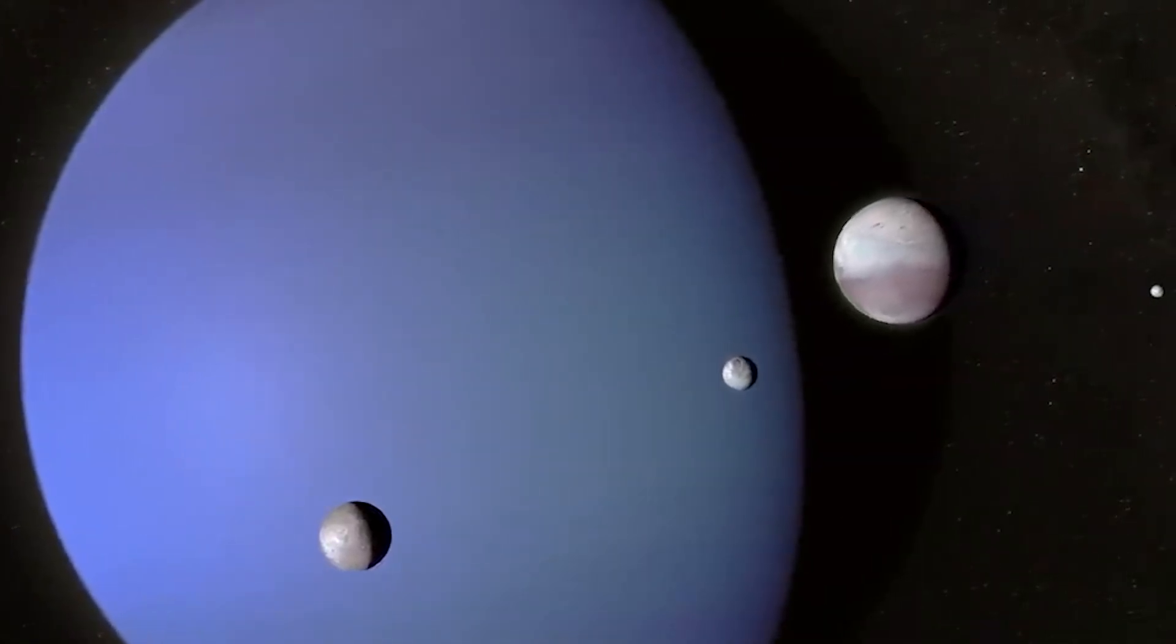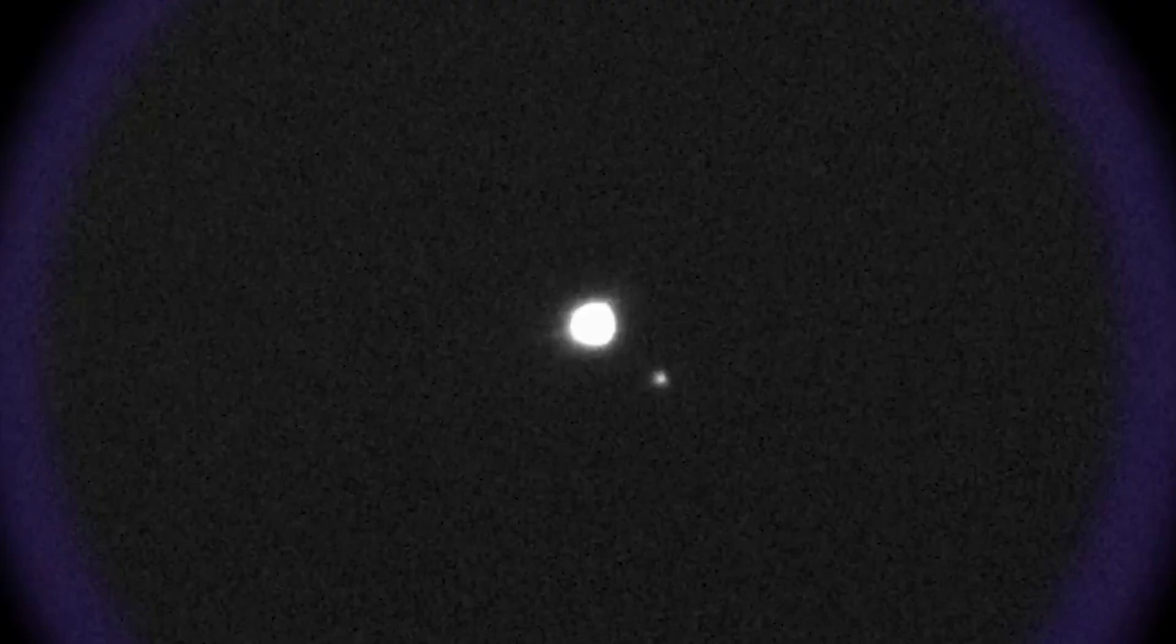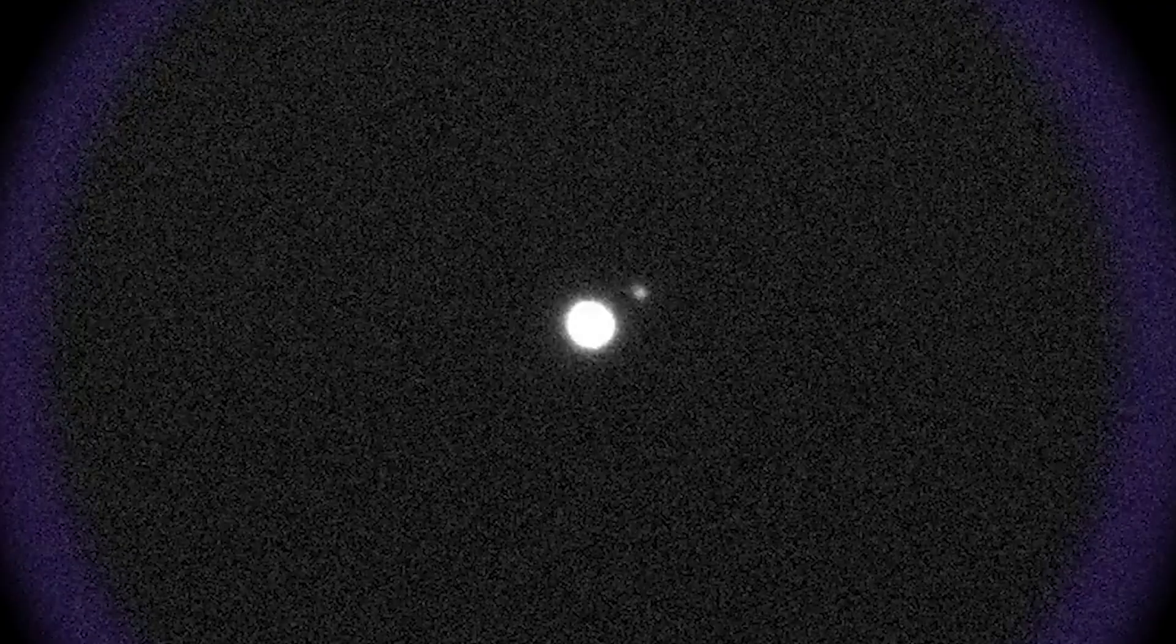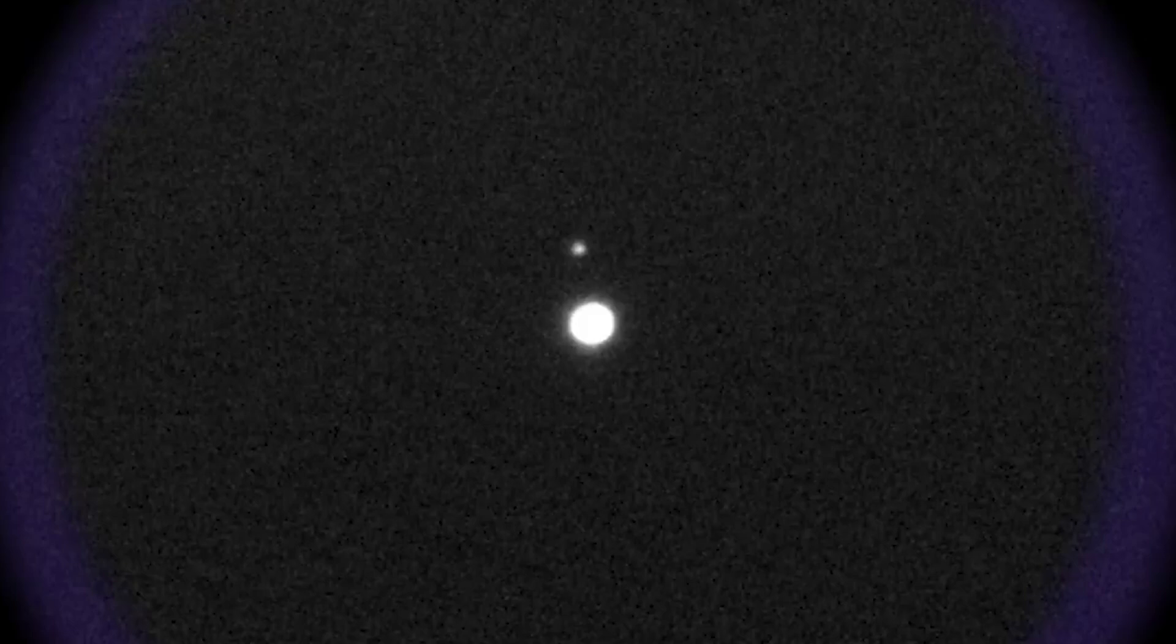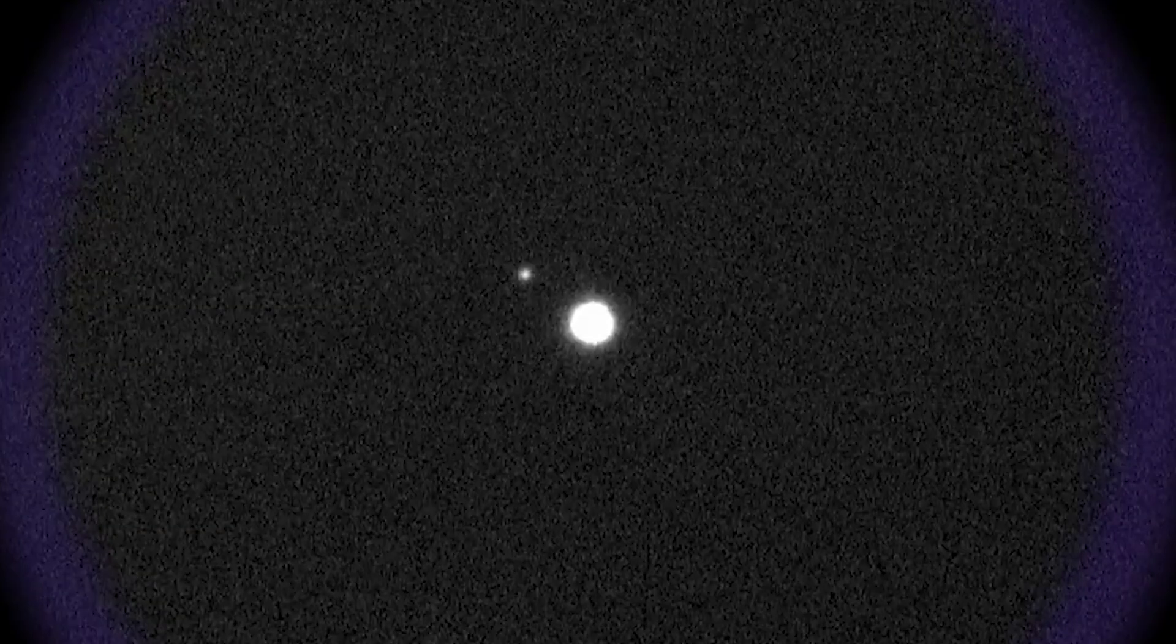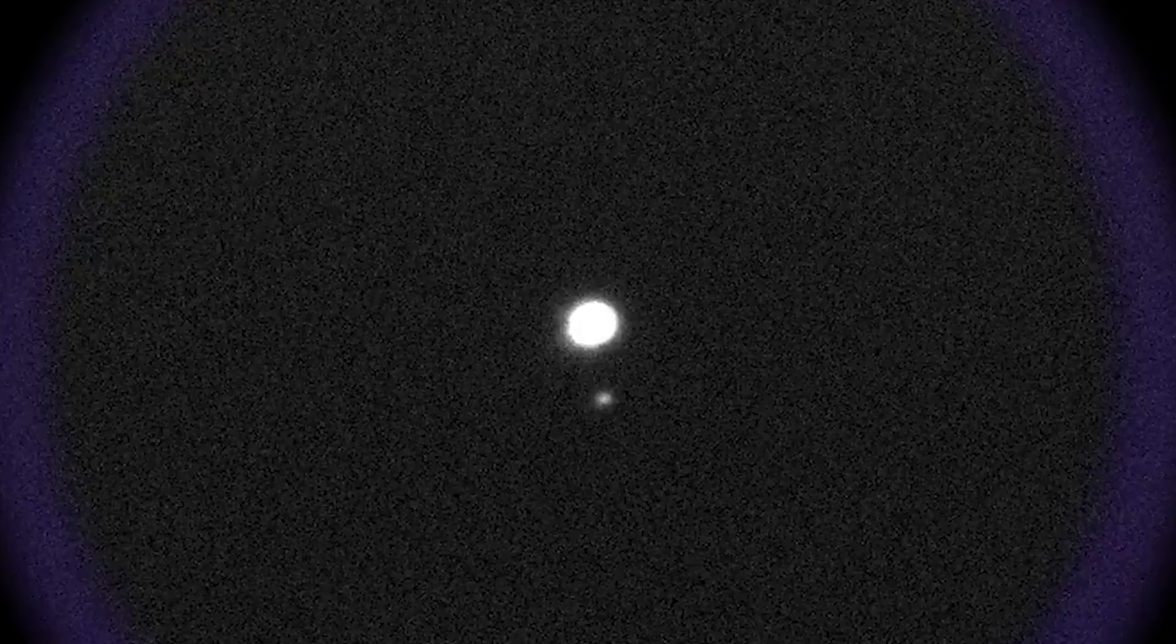It orbits Neptune in a retrograde direction, meaning it moves in the opposite direction of the planet's rotation. This unusual orbit suggests that Triton did not form alongside Neptune, but was likely captured later. Scientists believe it originated in the Kuiper Belt, a region of icy objects at the edge of the solar system, before being pulled into Neptune's gravitational embrace.